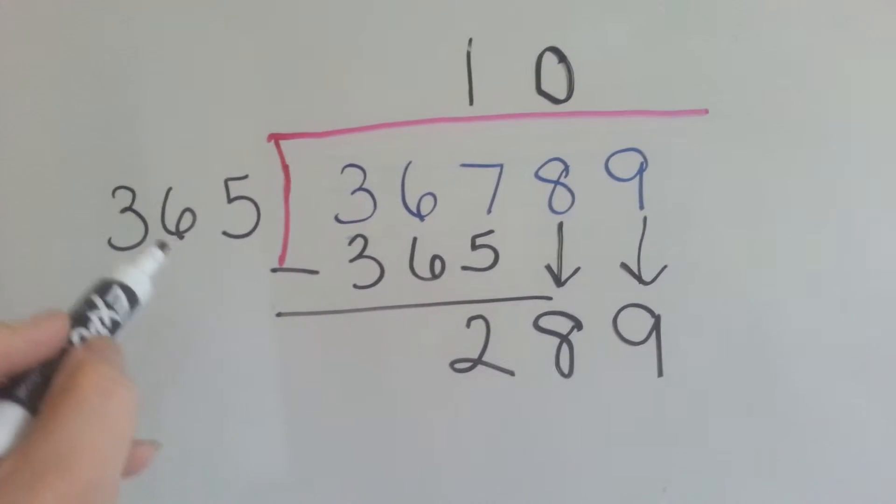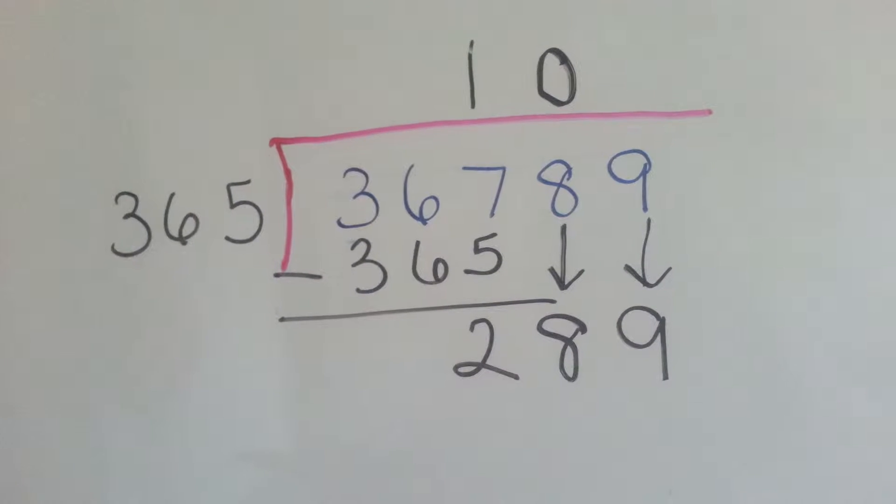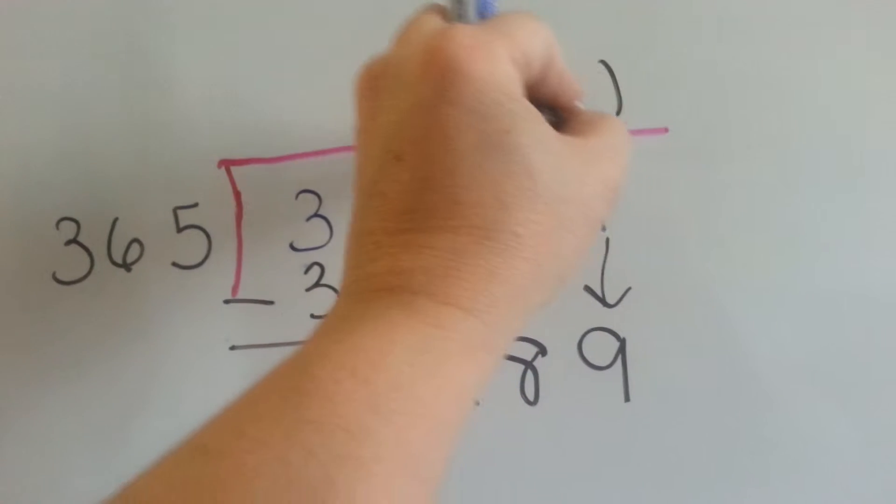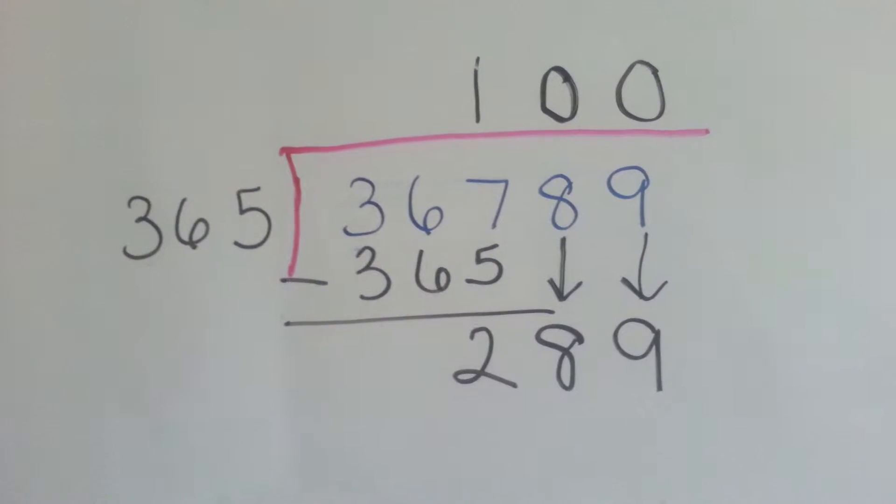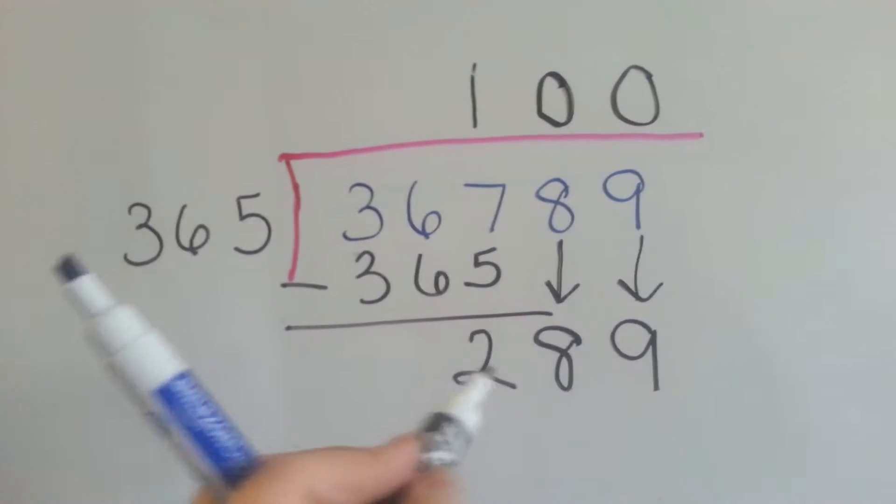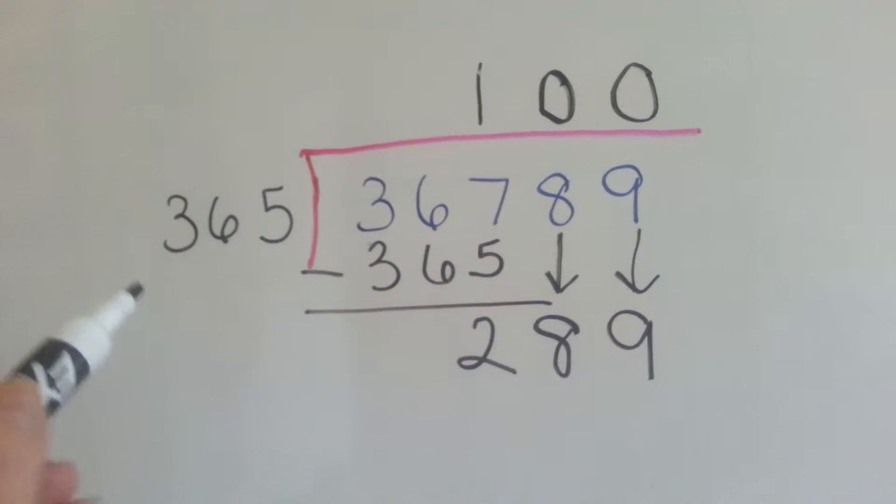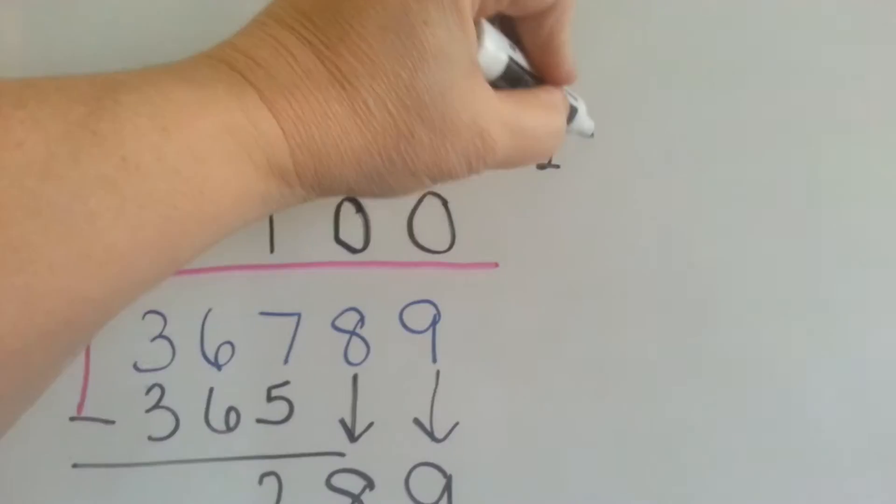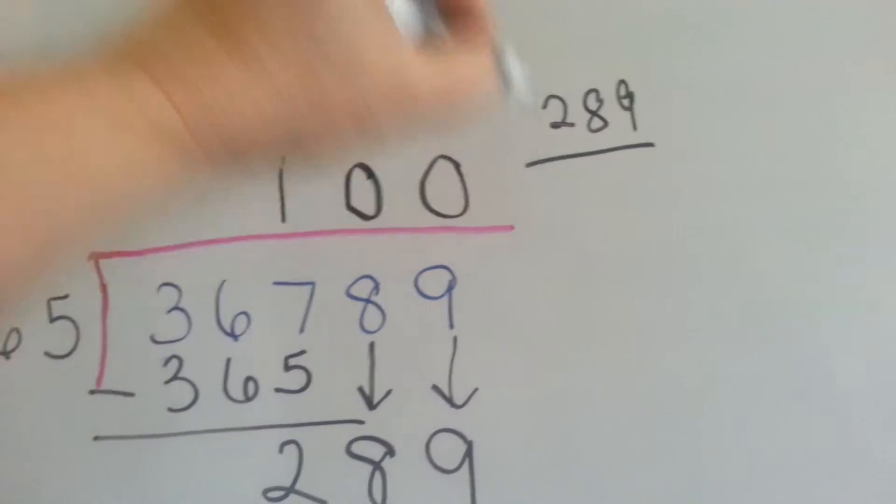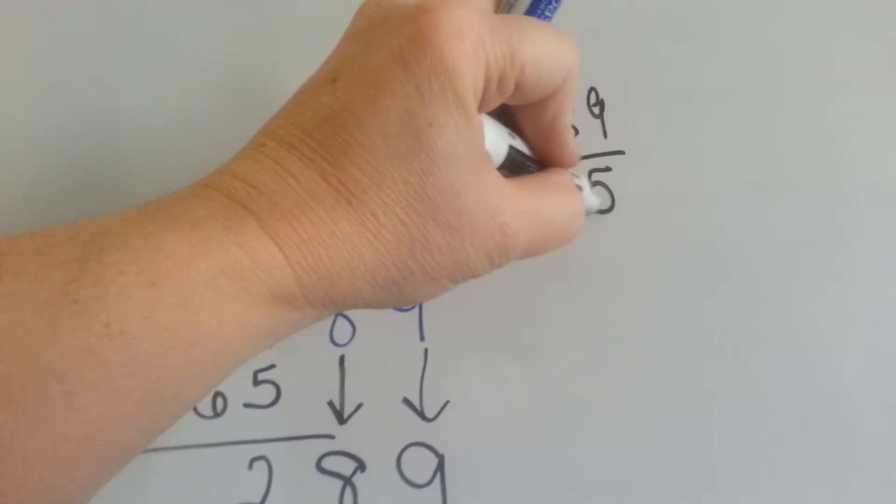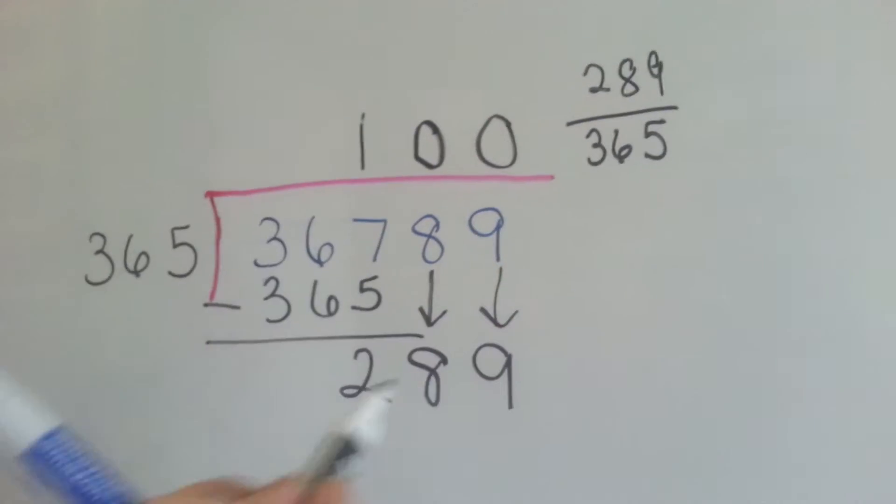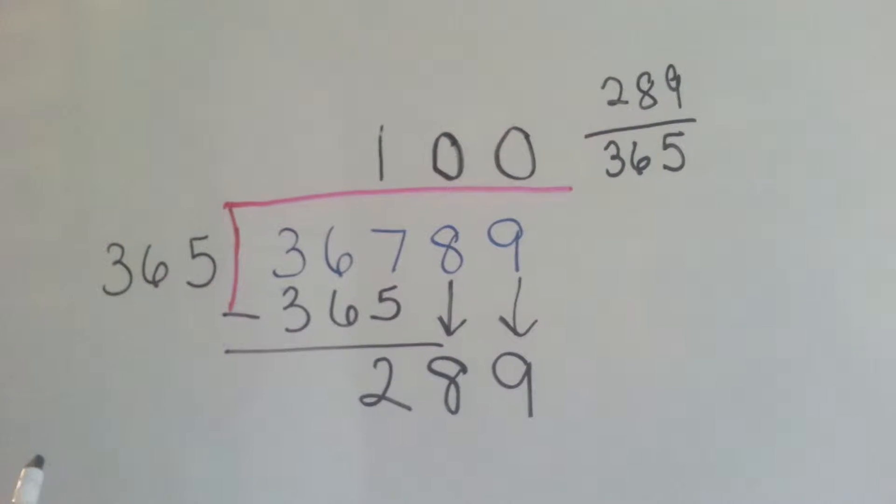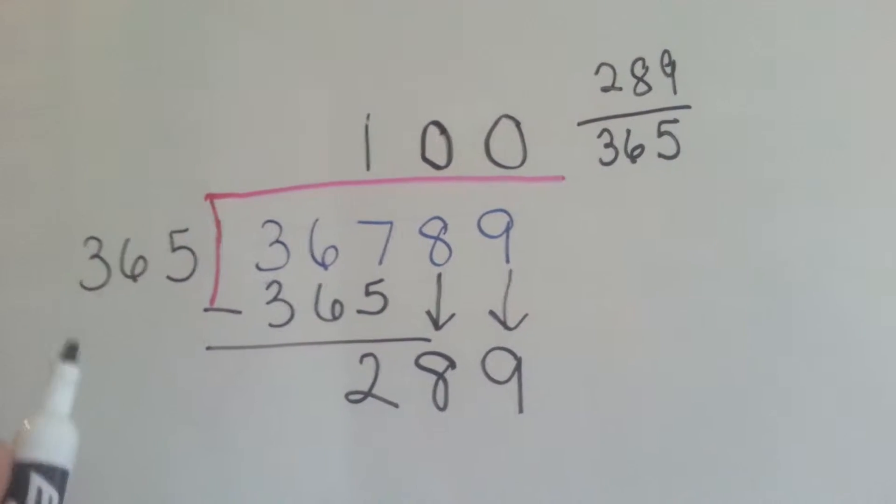Can 365 fit into 289? No, it can't. So we put another 0 here. Now there's two ways we could do this. We can either say that the answer is 100 with a remainder of 289 over 365, because we can write this as a fraction, with this as the denominator, and this as the numerator. That's one way to do it.